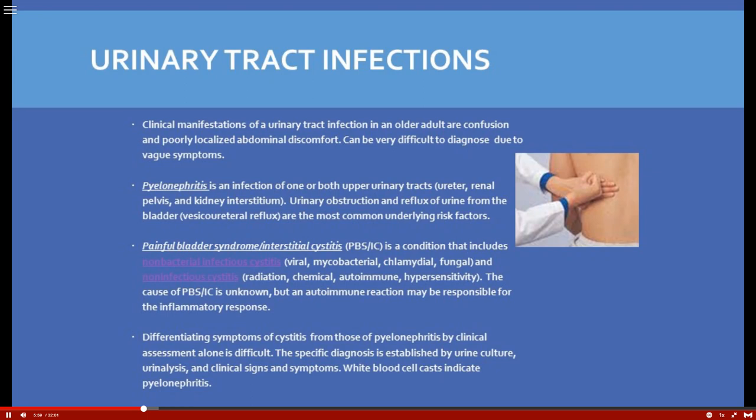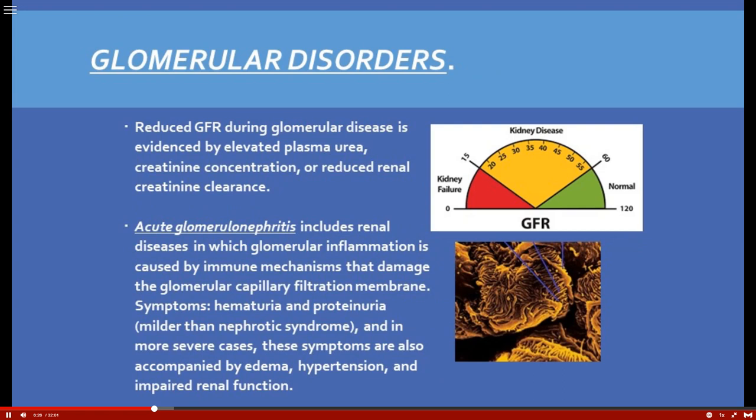Differentiating cystitis from pyelonephritis by clinical assessment alone is difficult. The specific diagnosis comes through a urine culture, starting with urinalysis. In pyelonephritis you'll see white blood cells and particularly white blood cell casts — not always, but their presence will move you toward ordering a urine culture.